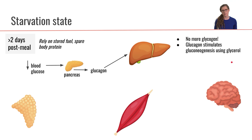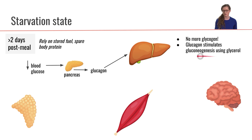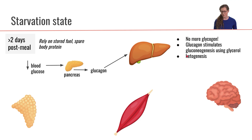In this case, gluconeogenesis will be using glycerol. Remember that glycerol is the backbone of our triglycerides, and glycerol can get funneled into glycolysis — and it turns out it can also run that pathway backwards to make glucose through gluconeogenesis.